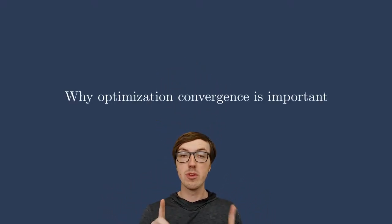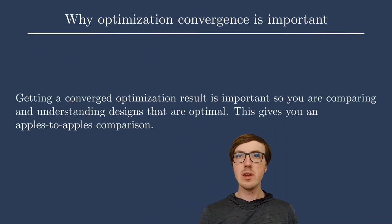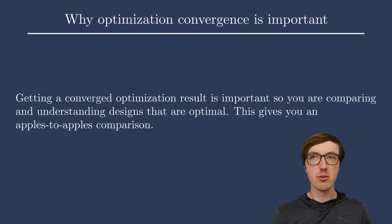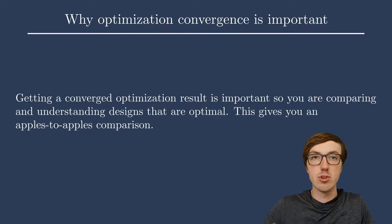Today we're talking about why optimization convergence is important. The whole idea here is that we need to get a converged optimization result so that we're comparing and understanding designs that are optimal. If the result is not converged, the values you're looking at, including the constraints and the objective, don't correspond with an optimal design. It's something along the way. It's just a design, not the optimal design.